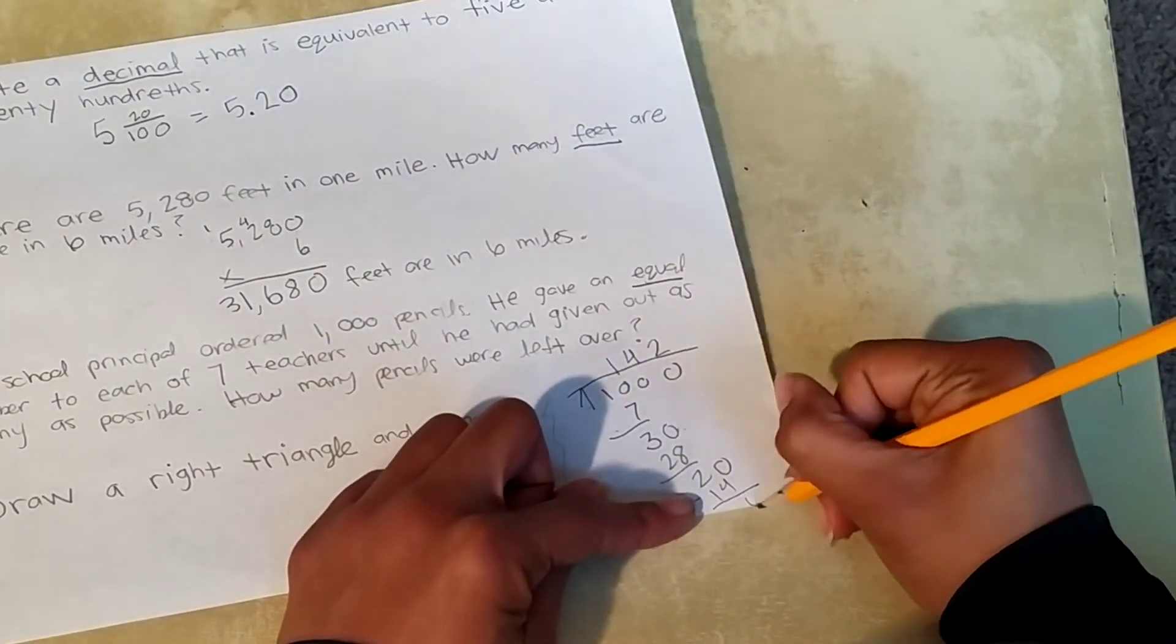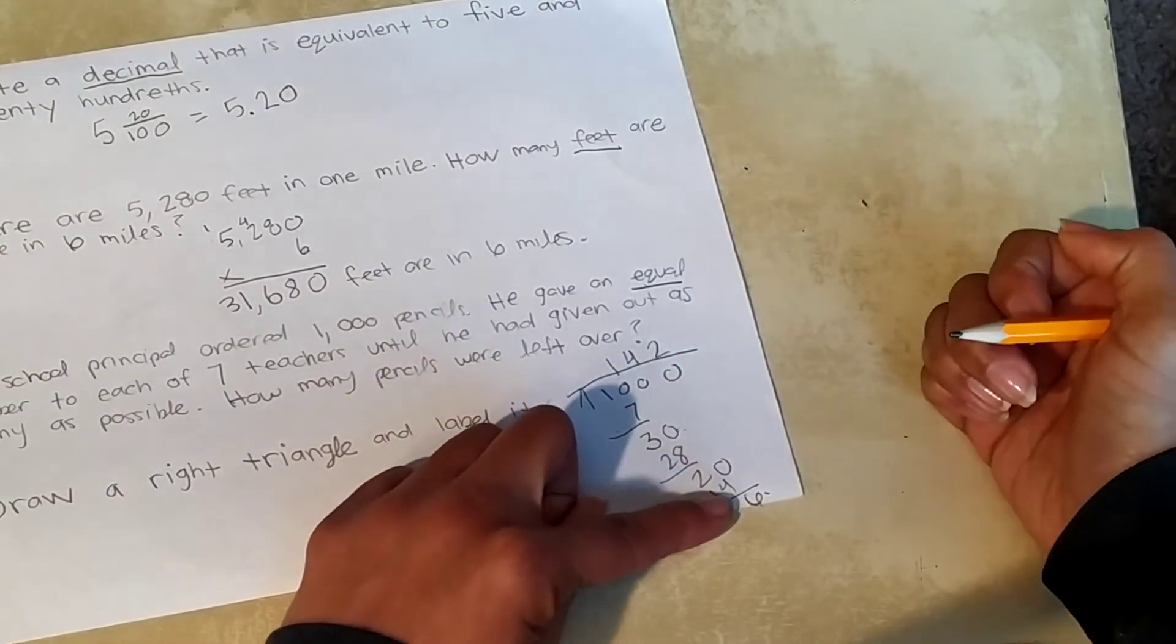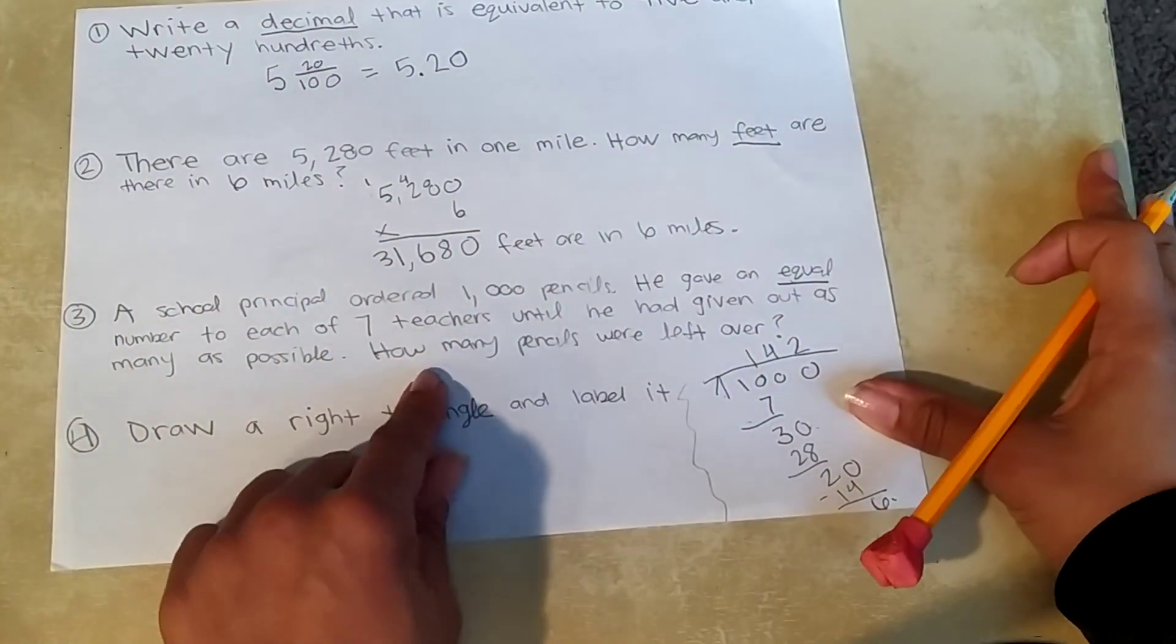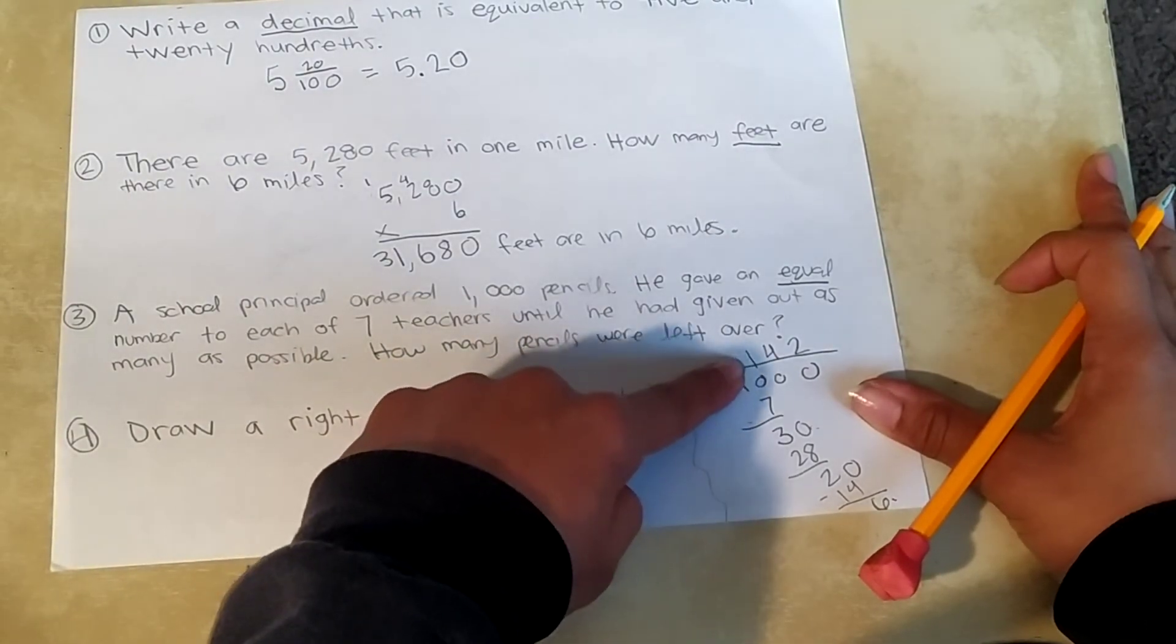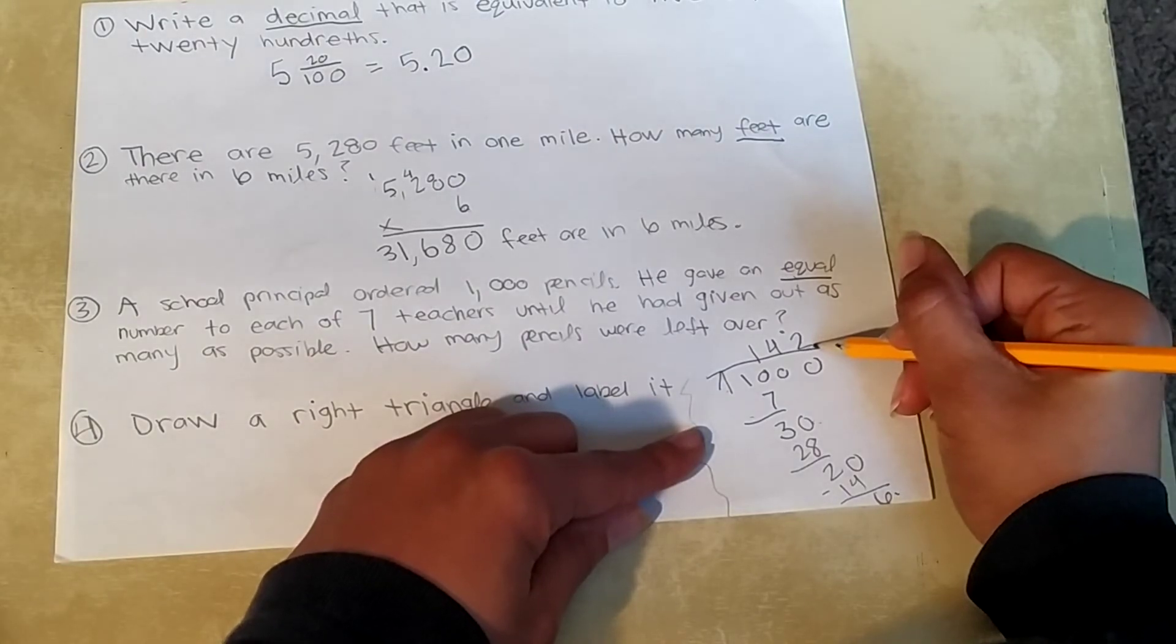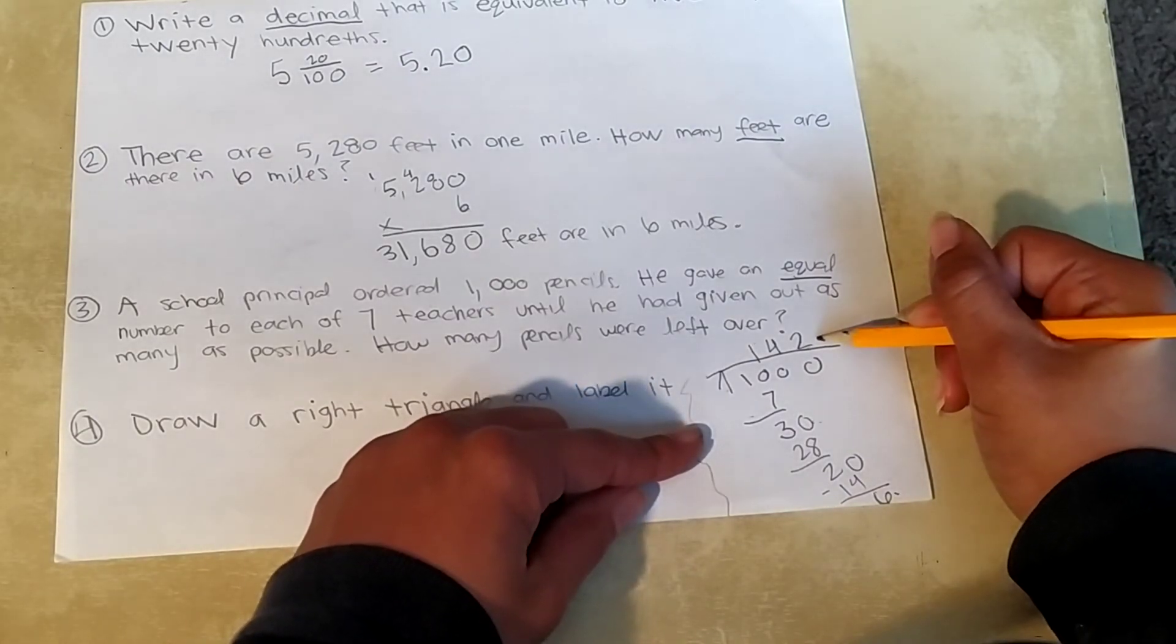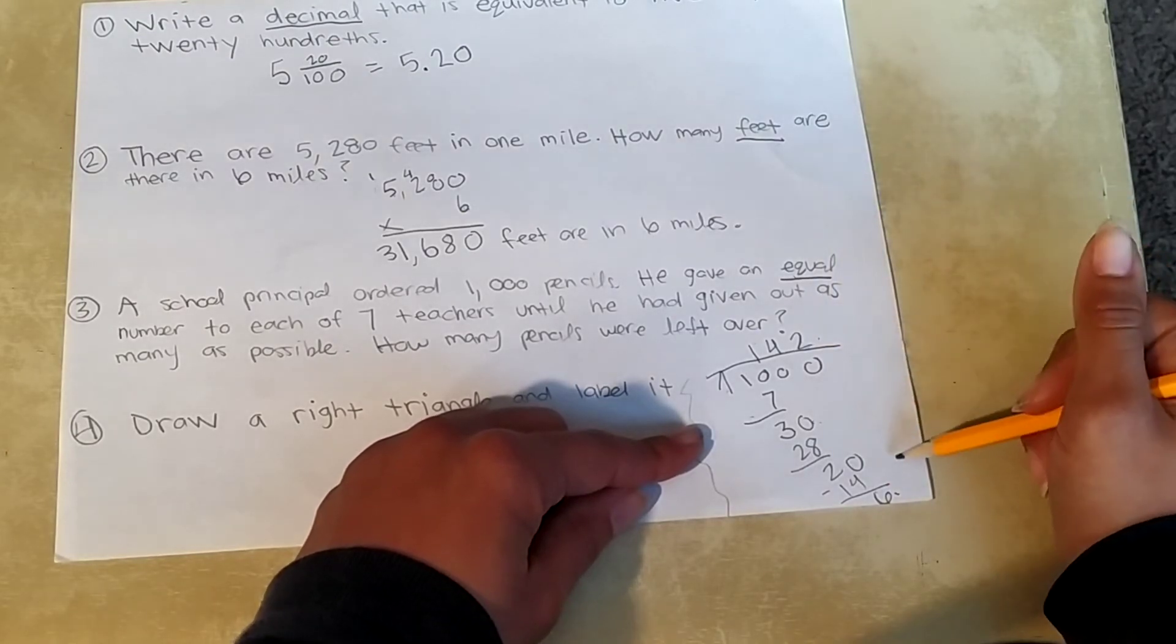We have a remainder of six. A remainder of six. That means there's six left over. Okay. What is the question that the problem is asking? How many pencils were left over? So are we going to give this answer? Not 142 pencils left over. Each teacher got 142 pencils.